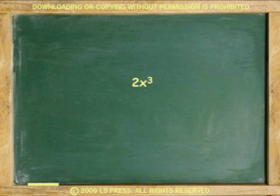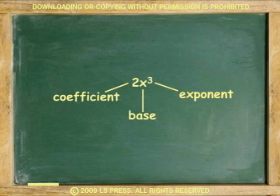An example of a monomial would be the expression 2x cubed, where x is the base, 2 the coefficient of x, and 3 the exponent.